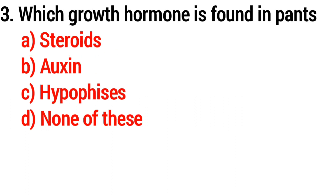Question number three: which growth hormone is found in plants? Answer option B — auxin.